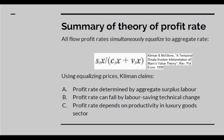Using equalising prices, Kliman claims: A, that the profit rate is determined by aggregate surplus labour; B, that the profit rate can fall in the event of labour-saving technical change; and C, that the profit rate depends on productivity in the luxury goods sector. Now we're going to evaluate these claims by setting up a model.